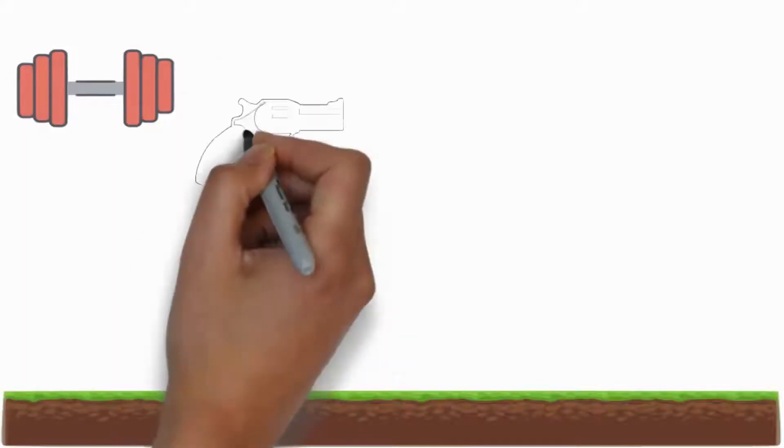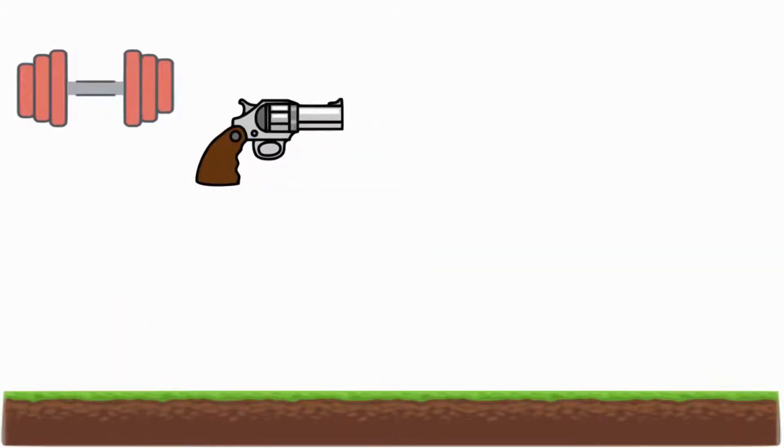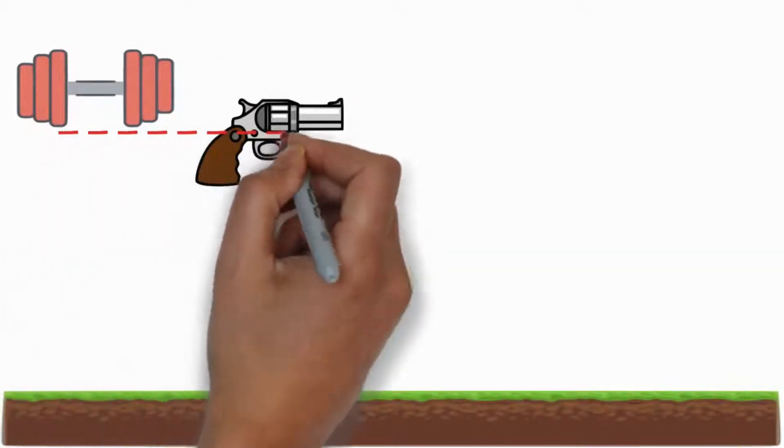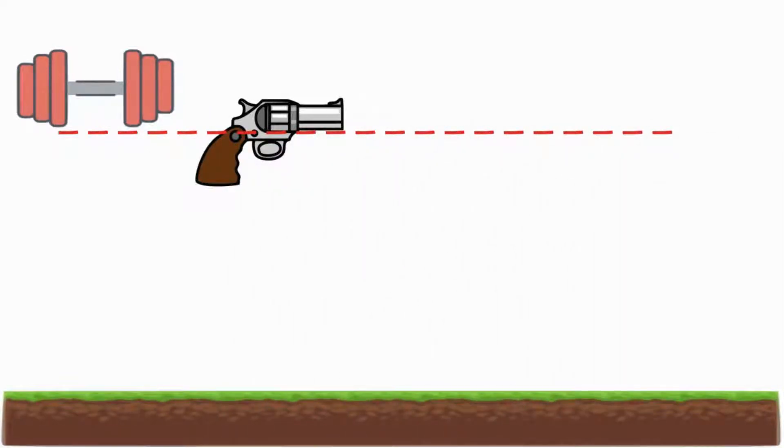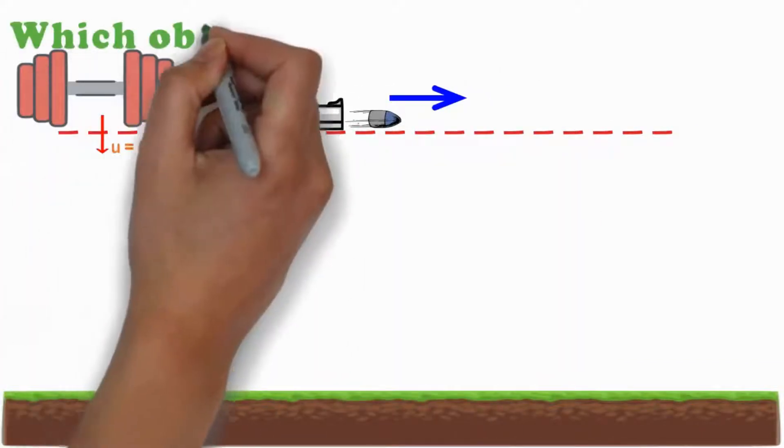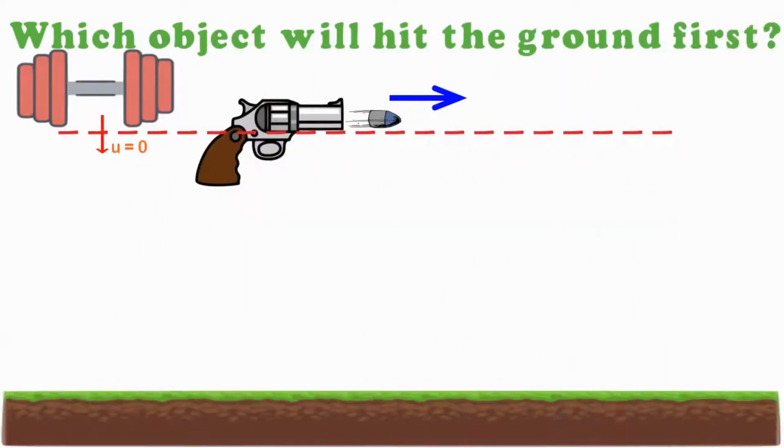Suppose I have a heavy dumbbell and a loaded gun kept horizontal, such that the lowest part of the dumbbell and the lowest part of the bullet inside the gun are at the same height. Now if the dumbbell is released and at the same time the bullet is fired horizontally, then which object will hit the ground first? You can pause the video for some time and think on it.